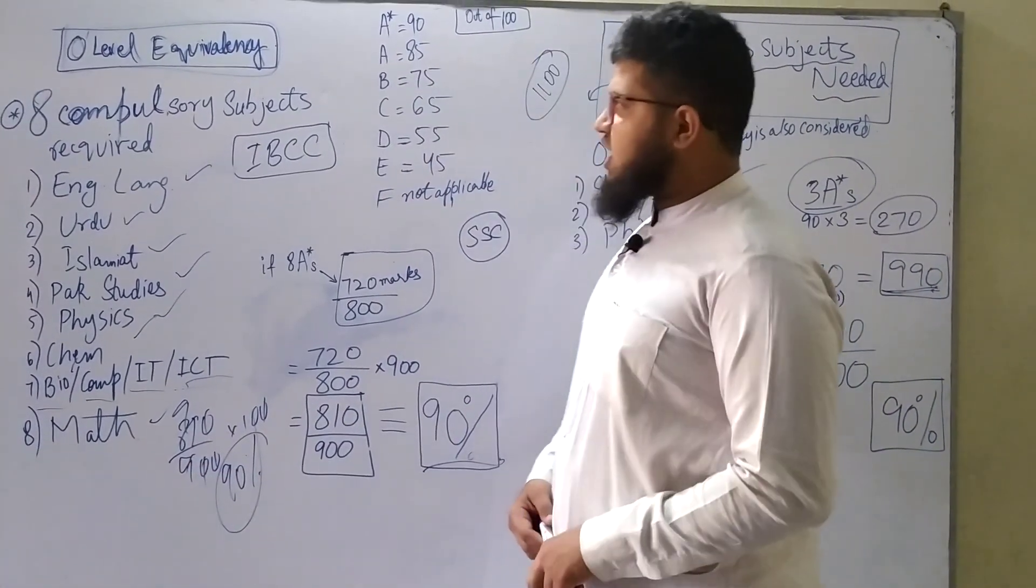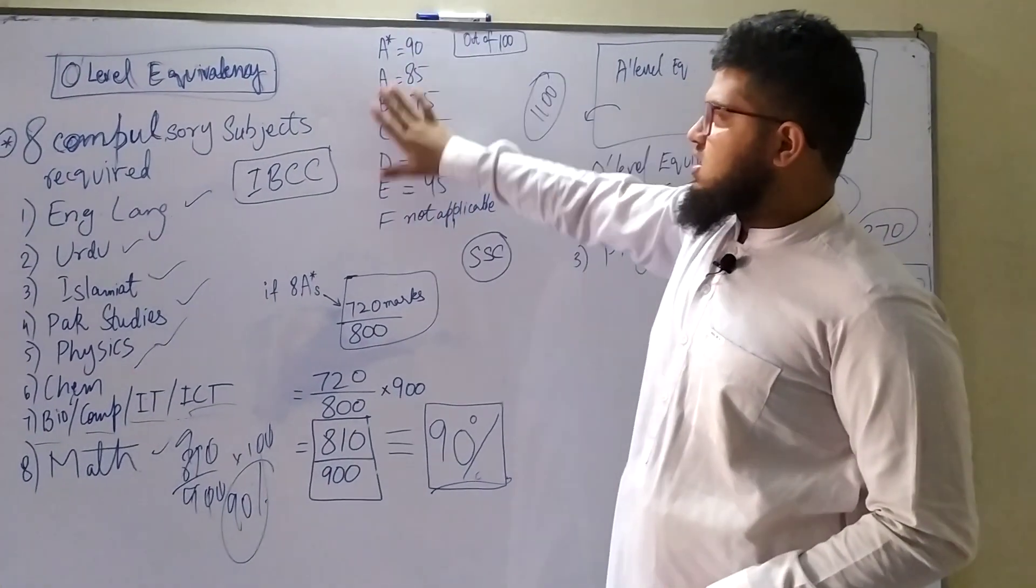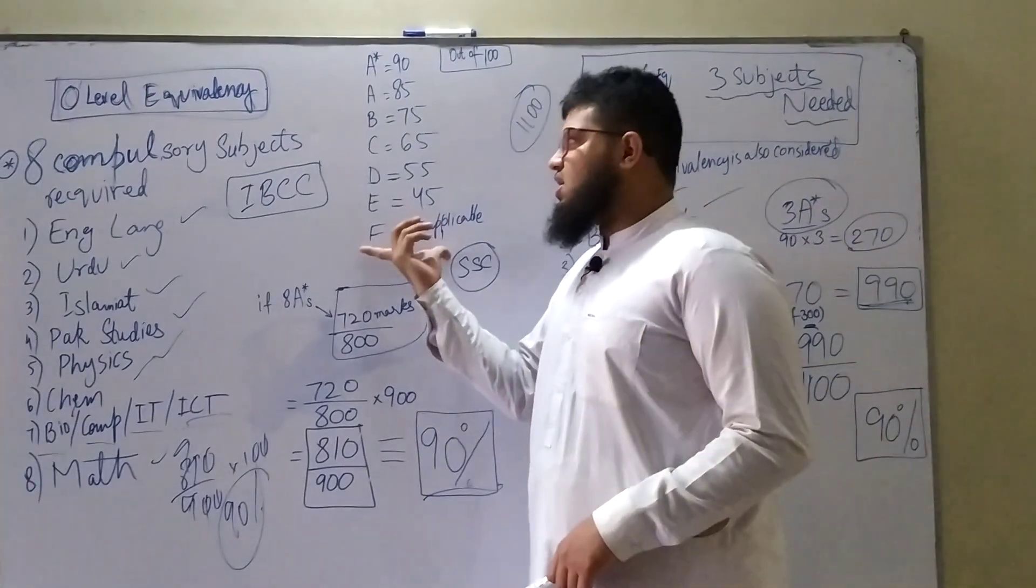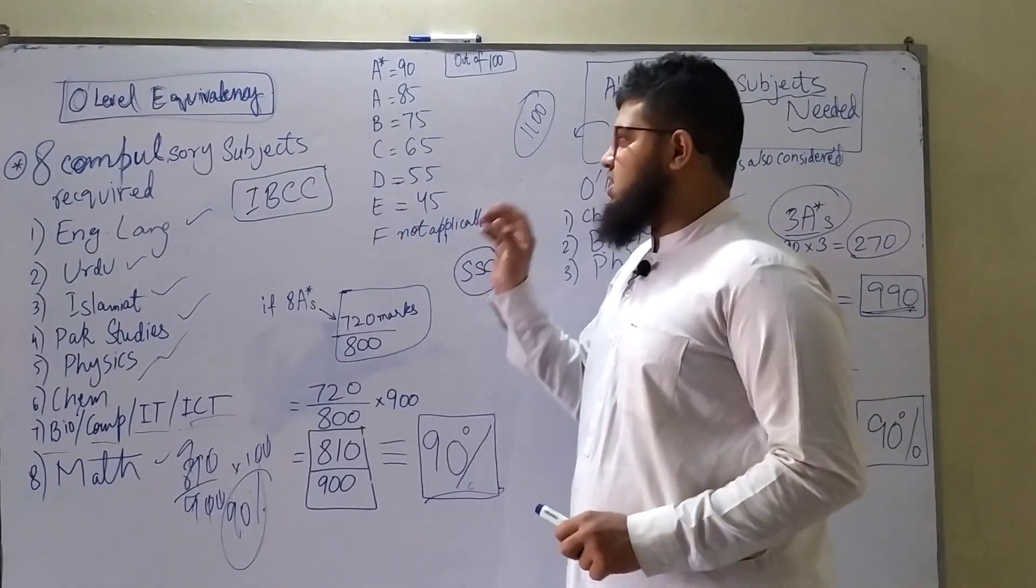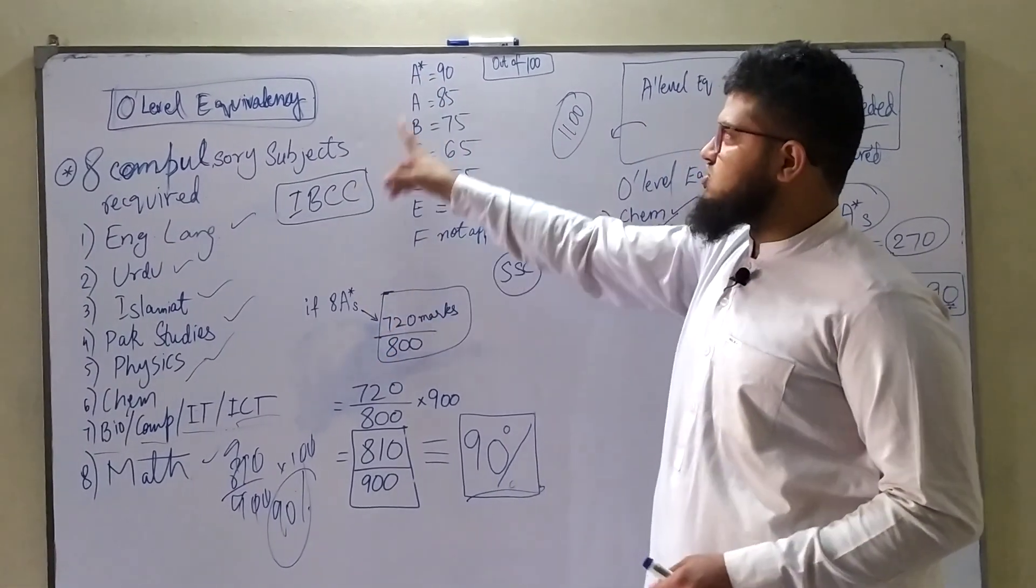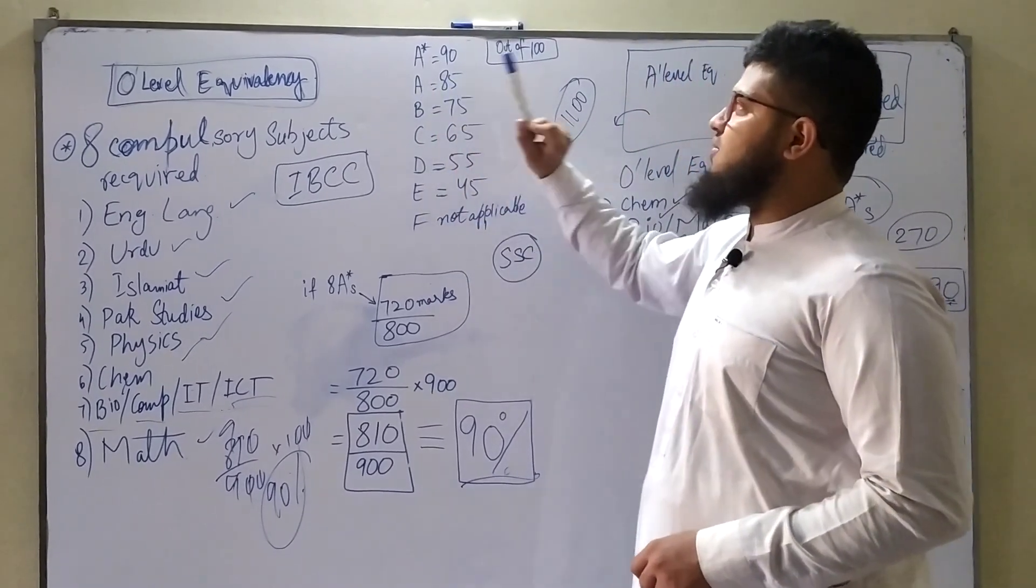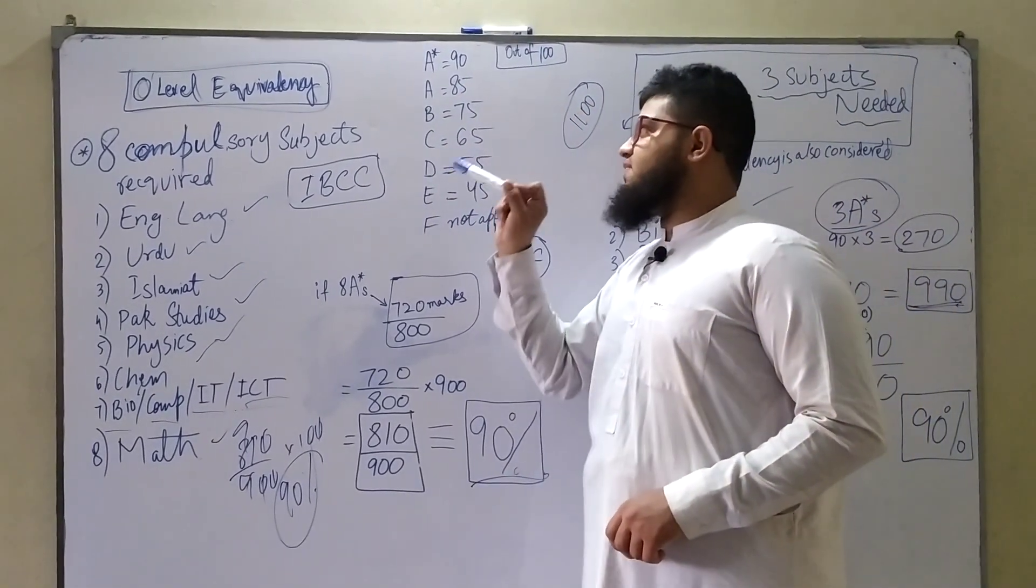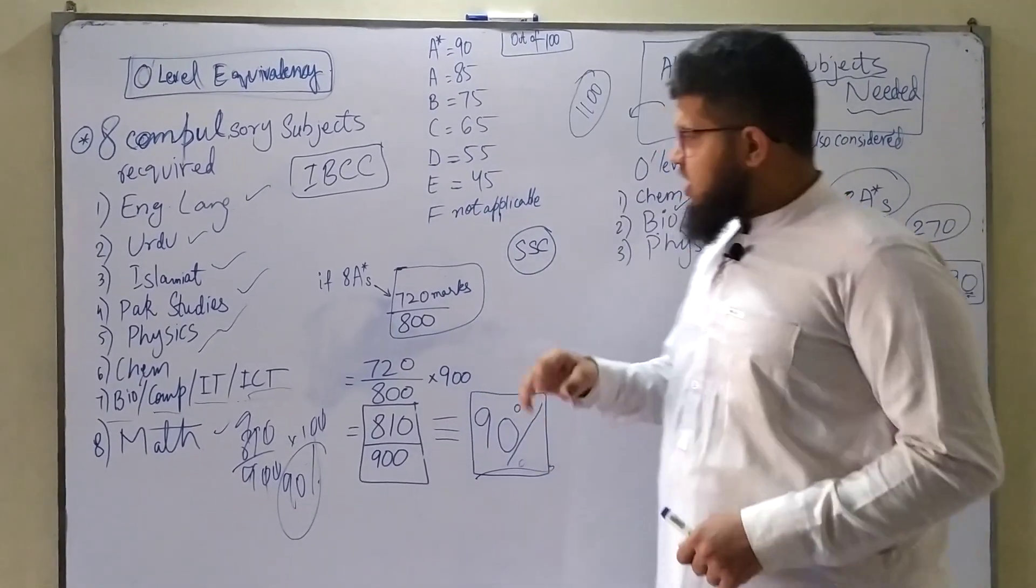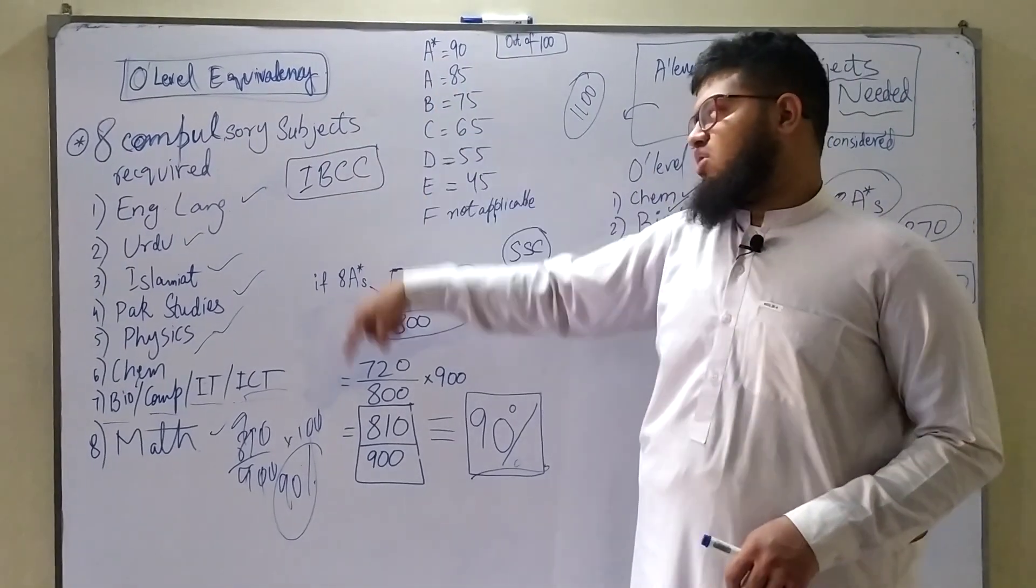If you look, this table is given. This table is IBCC's, given on their website. Each grade has certain Pakistani marks. If you get an A star in any of these subjects, you'll be awarded 90 marks out of 100. If you get an A, you'll be awarded 85 out of 100. B is 75, C is 65, D is 55, E is 45 and so on.